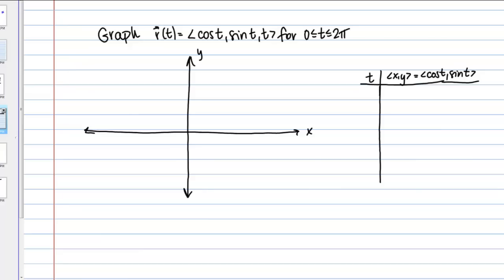Looking at just the X and Y components: X is cosine t and Y is sine t. Some of you might already recognize this as a unit circle, but if you don't, you could make a table of values. Let's plug in a few different values of t — starting with 0, then pi over 4, pi over 2, and pi — and get the output vector.